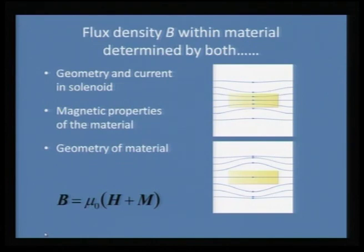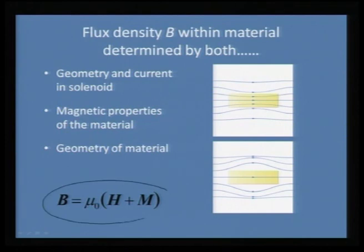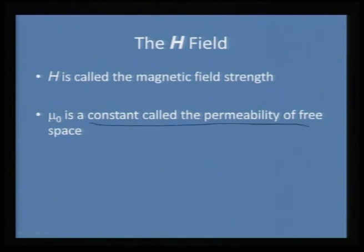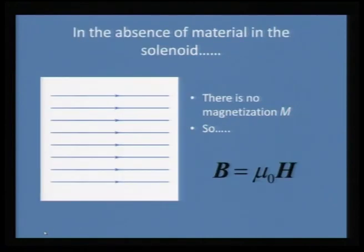Flux density B within a material can be determined by both the geometry and current in the solenoid, the magnetic properties of the material, and the geometry of the material. Three things are interdependent: the solenoid itself determines what flux density you have, then the magnetic property of the material, and then the geometry of the material. B, your flux density, equals μ₀H which is due to your magnetic field, plus μ₀M which is due to the magnetic material itself — where μ₀ is the permeability of free space. In case there is no magnetization, if the material is not magnetic, your flux density equals μ₀H, but if the material is magnetic then the other parameter also comes into picture.